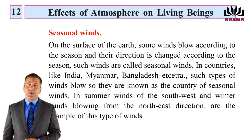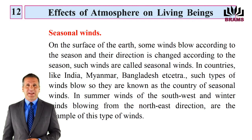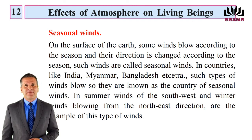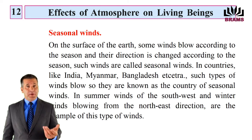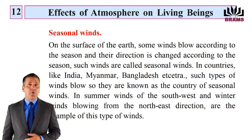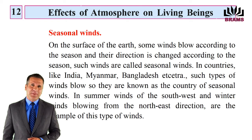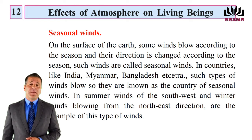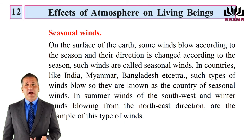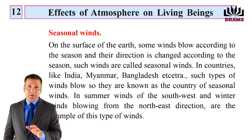Seasonal Winds: On the surface of the earth, some winds blow according to the season and their direction changes according to the season; such winds are called seasonal winds. In countries like India, Myanmar, Bangladesh etc., such types of winds blow, so they are known as the country of seasonal winds. In summer, winds from the southwest and in winter, winds from the northeast direction are examples of this type of winds.